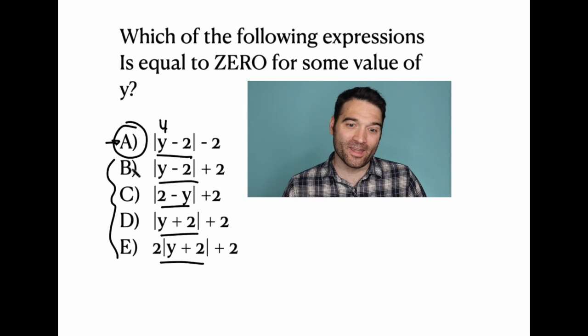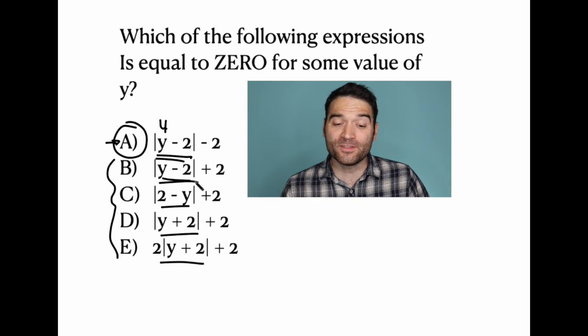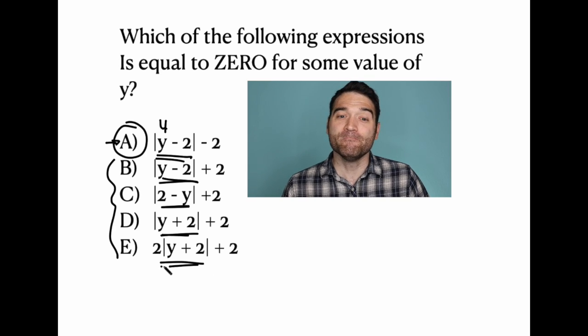So a is the only one that could possibly be equal to zero, because all of these other ones, the minimum value to come out of the absolute value would be zero.